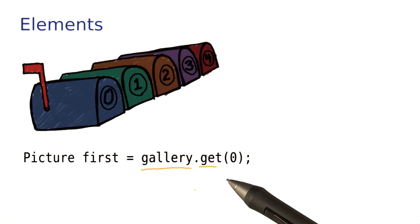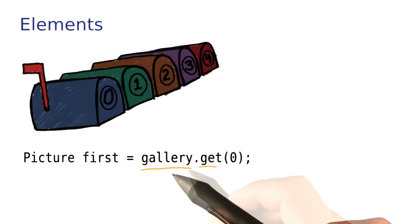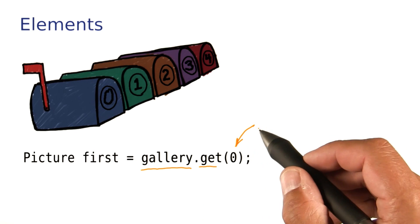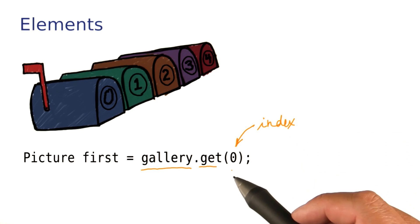Here is how you get an element out of an ArrayList. Remember that gallery was an ArrayList of pictures. The get method can get a picture out of that collection. The argument of the get method is called an index. And as it happens in Java, the index values start with 0.